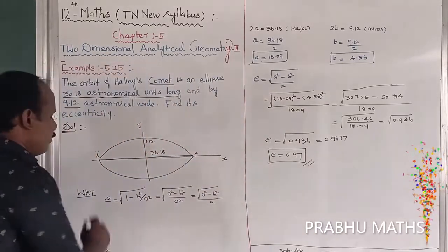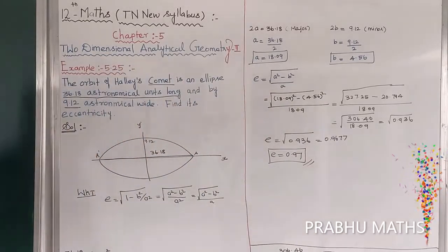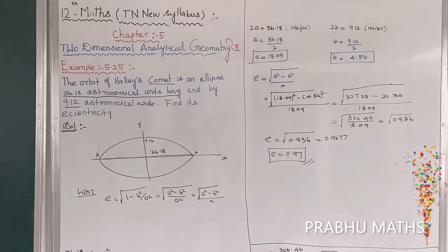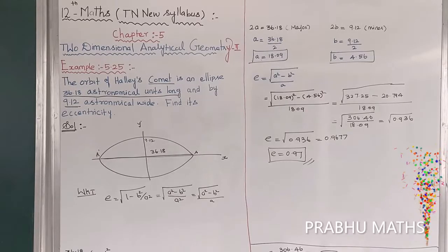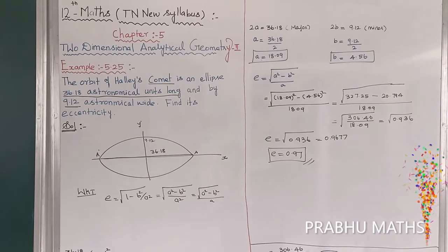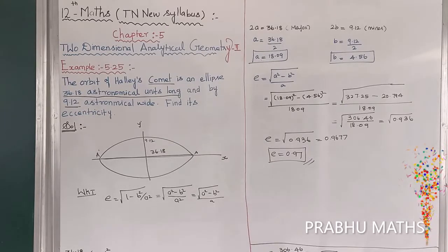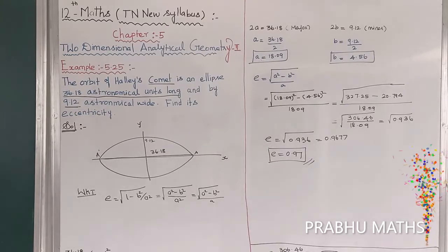The formula should be memorized: e = √(1 - b²/a²) = √((a² - b²)/a²). That is the important formula. This problem is very easy once you know the formula.